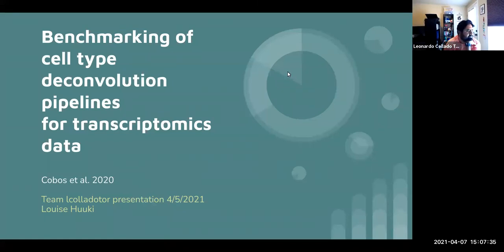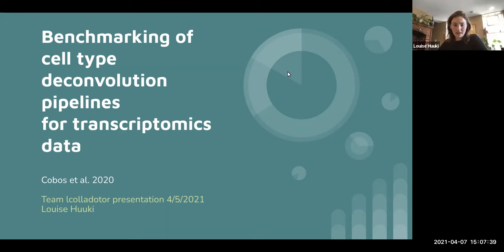All right. So for this week, I'm going to present this benchmarking paper that was in Nature Communications last year. It's benchmarking cell type deconvolution pipelines for transcriptomics data. Basically, they compare a bunch of different deconvolution methods on some standardized data.